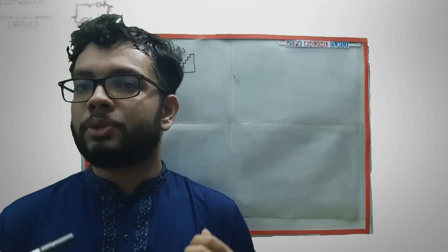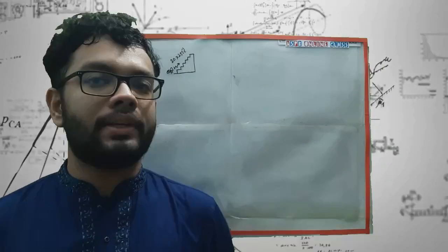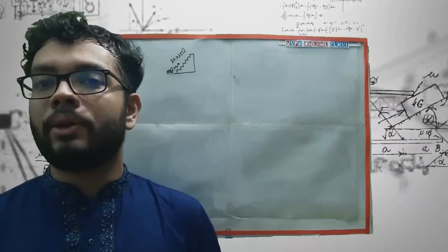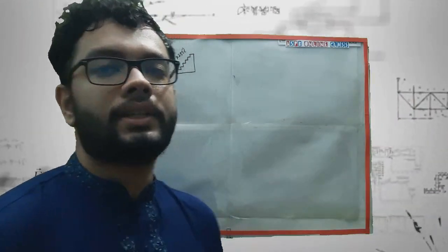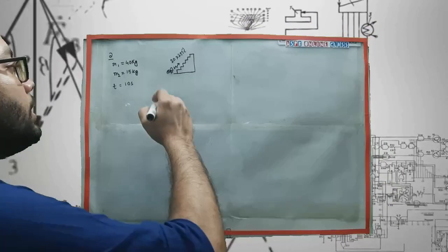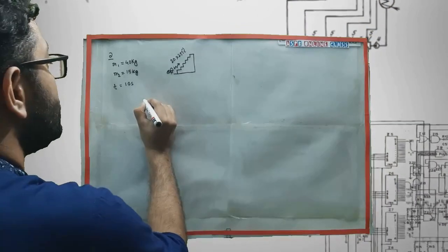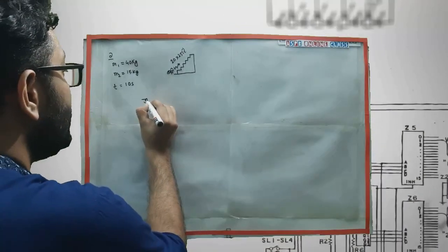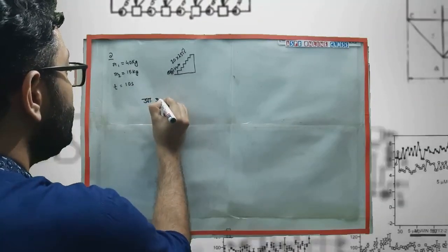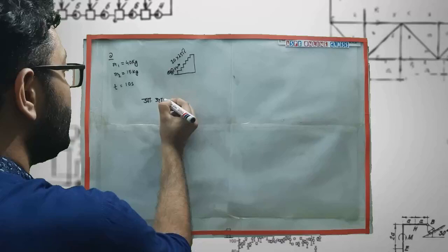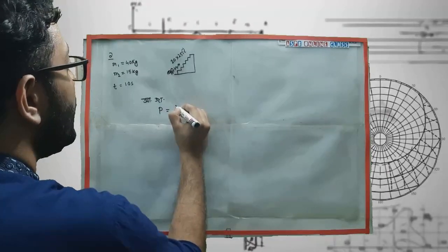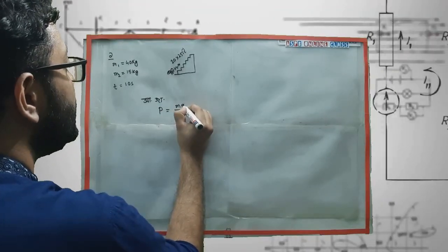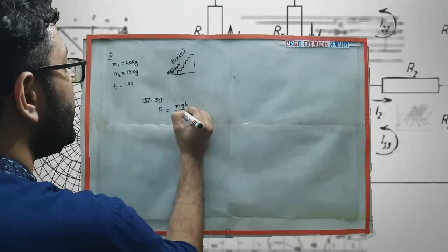If you have to watch it, you will see it in the video. If you want to know the video, you will see it. If you want to write it in the video, you will write P, M, G, H by T.